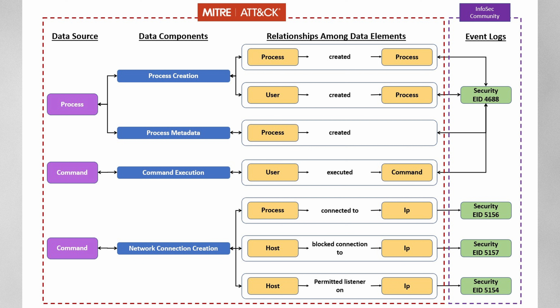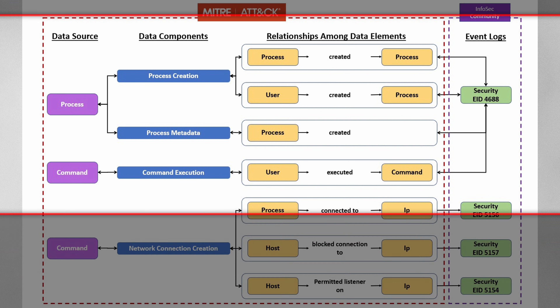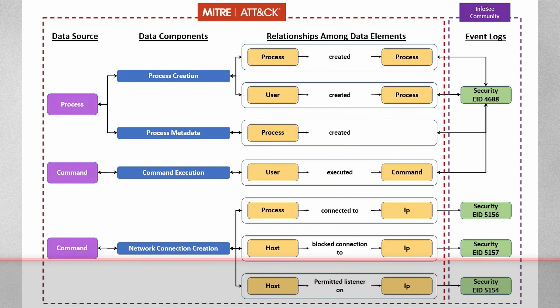When talking about process creation, one of the main reasons we want to track this type of event is that when we look at the MITRE ATT&CK framework and its different data sources, one of them is process — specifically process creation and process metadata. As you can see in the information MITRE makes available, those are tracked via Security Event ID 4688, and command line execution is also tracked by this event. In the case of Sysmon, it provides the same type of information but enhances it with additional metadata that we can use as we track actors executing things in our systems.